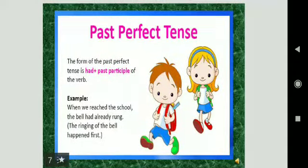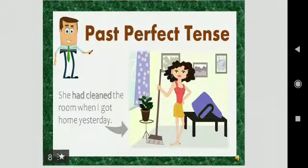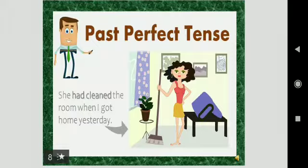More examples to clear your doubts. The form of past perfect tense is subject plus had plus past participle. Example, when we reached the school the bell had already rung. The ringing of the bell happened first then we reached. So it means one action is already completed when another action occurred. Next is she had cleaned the room when I got home yesterday. Had cleaned is your past action and got is your action after first action has been finished.